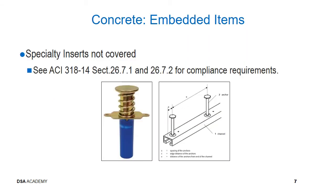Specialty inserts are not covered in ACI 318. However, compliance requirements are contained in sections 26.7.1 and 26.7.2 of ACI 318-14. Generally, ICC ESR or equivalent reports are required for specialty inserts. Project inspector needs to read the report to see if the insert may be used for the intended application, such as whether the insert can be used for gravity and lateral forces, whether it can be used in exterior applications, and to confirm installation requirements.